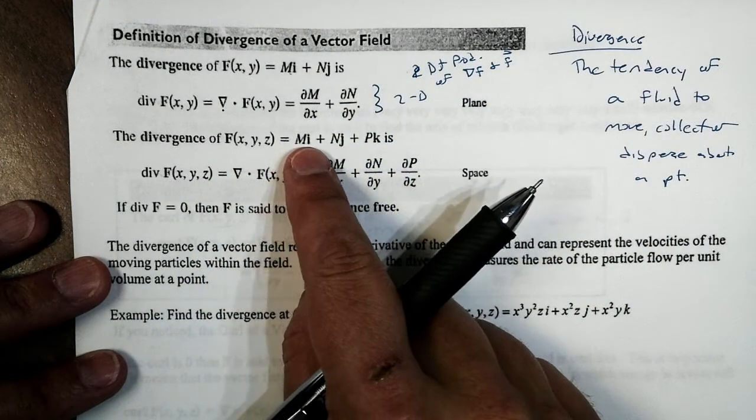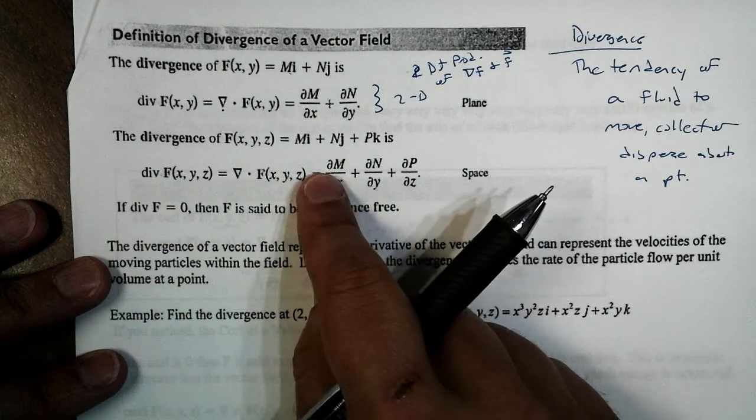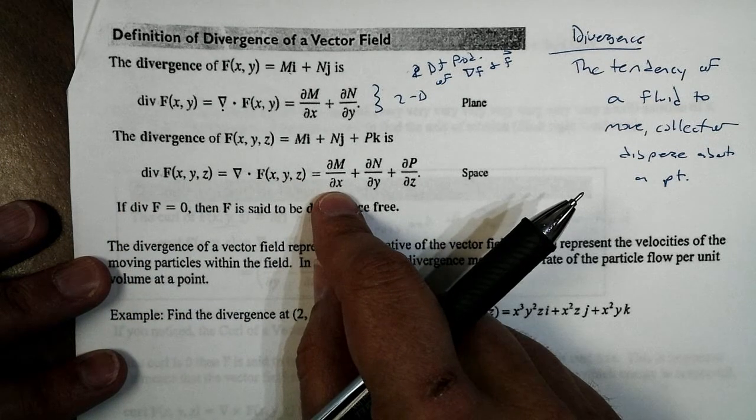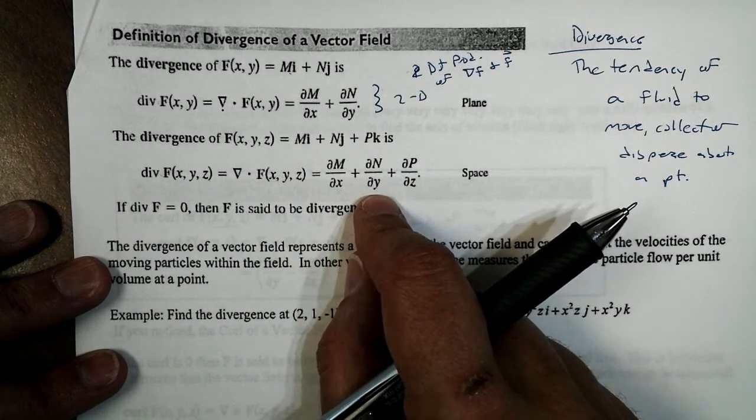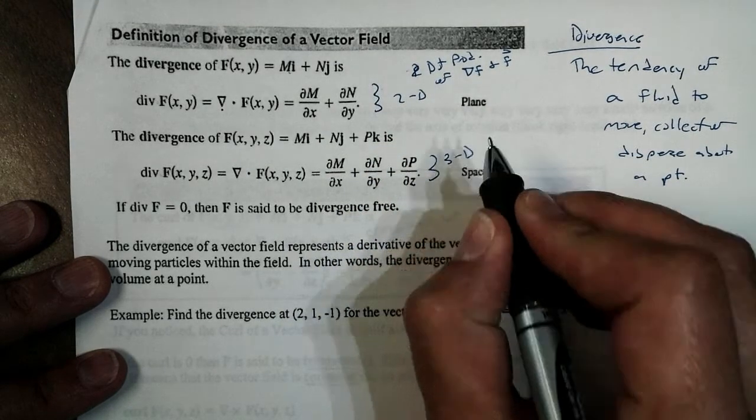And in three-dimension, if we take the dot product and we call it div F, we would get the partial of M with respect to x, the partial of N with respect to y, and the partial of P with respect to z. And, of course, this is in three-dimensional space.